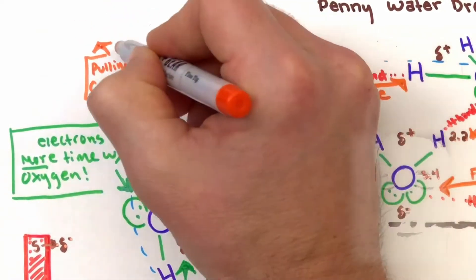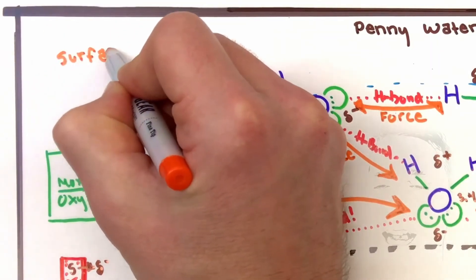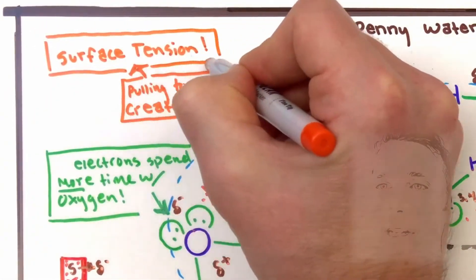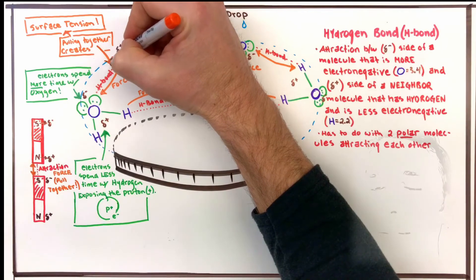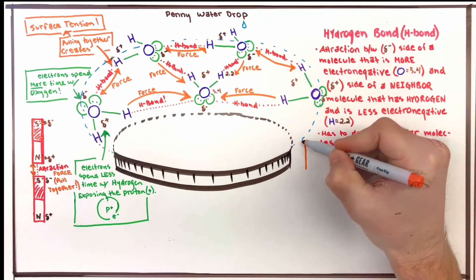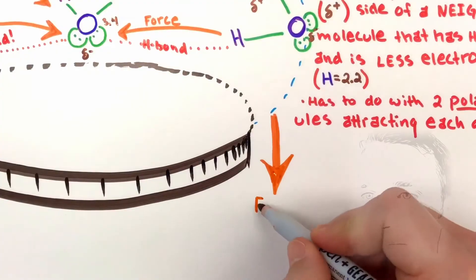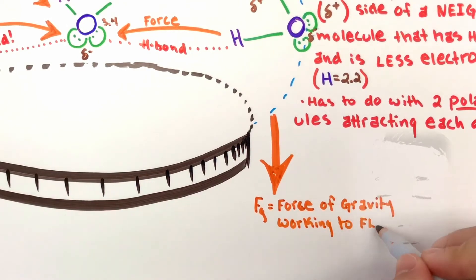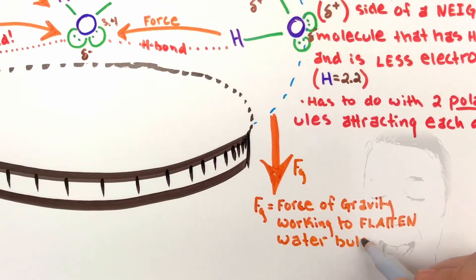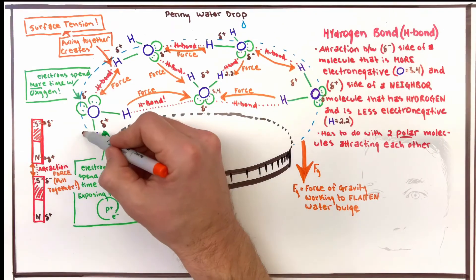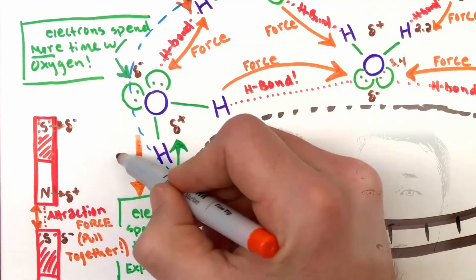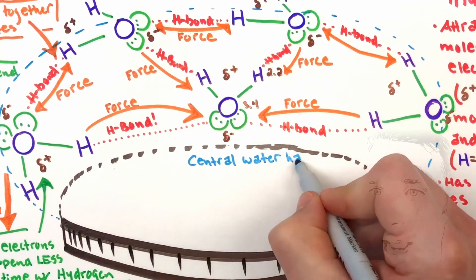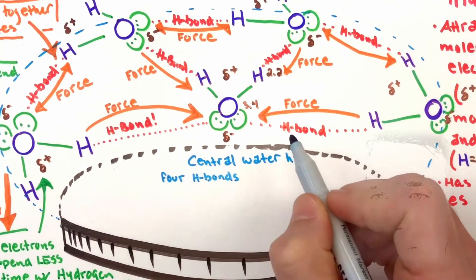They're using the principle of surface tension — the perimeter waters don't want to be broken, and they kind of form a surface. Gravity though is pulling down on this big water bulge that's forming. The force of gravity is working to flatten the water bulge, and the flattening increases the strain on all of our hydrogen bonds — the more it flattens. The water itself, our central water, has these four hydrogen bonds pulling the exterior water in, trying to make that sphere.